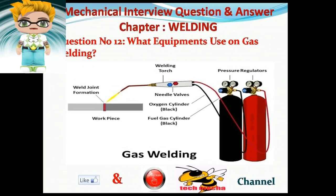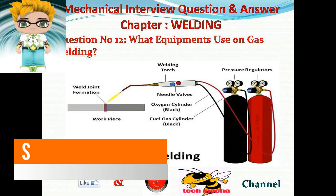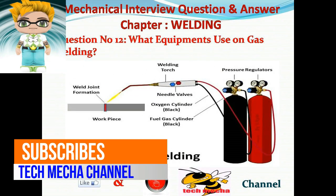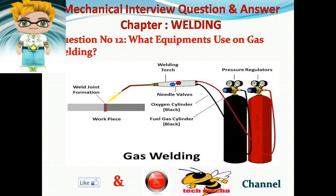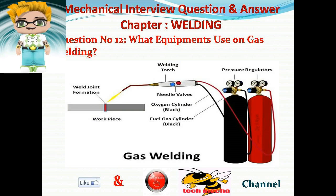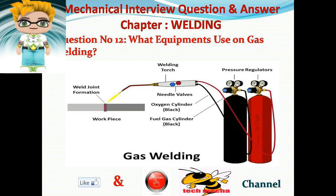Question number twelve: What equipment is used in gas welding? Answer: Gas welding equipment includes: welding torch, oxygen cylinder, fuel gas cylinder, pressure regulator, goggles, and gloves.